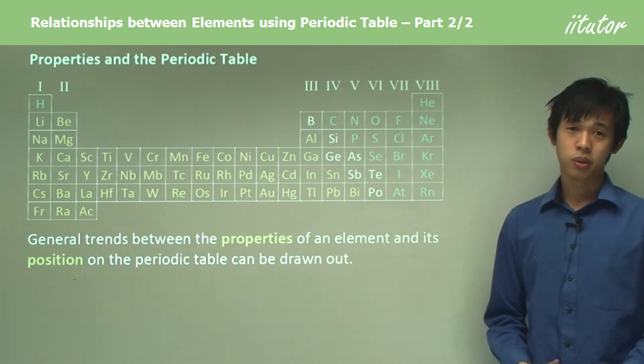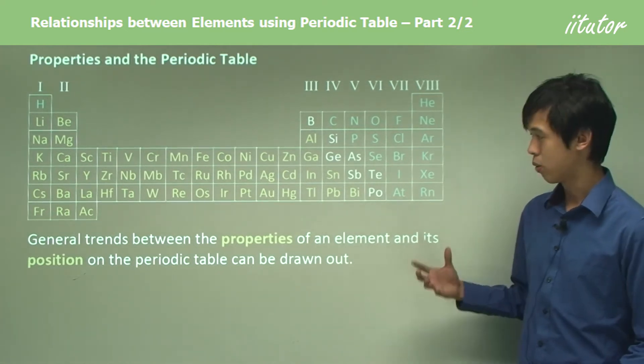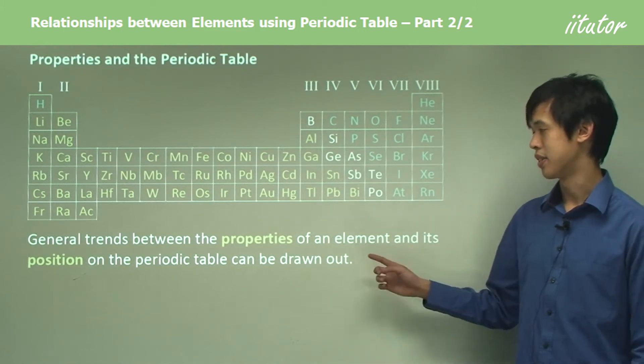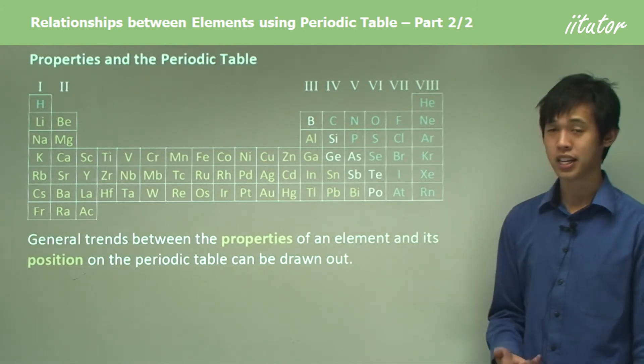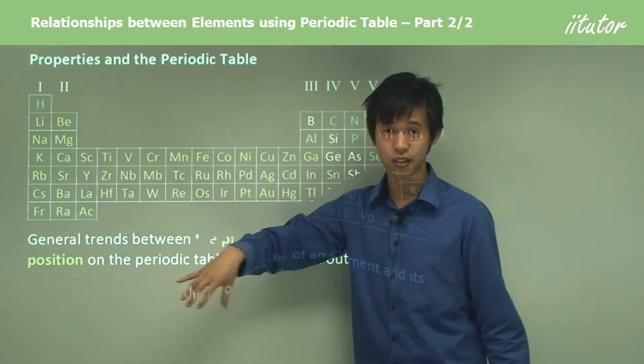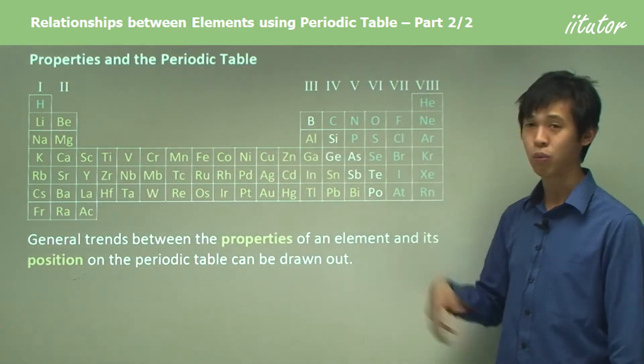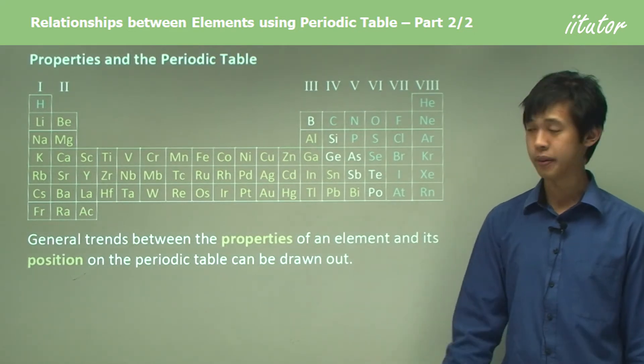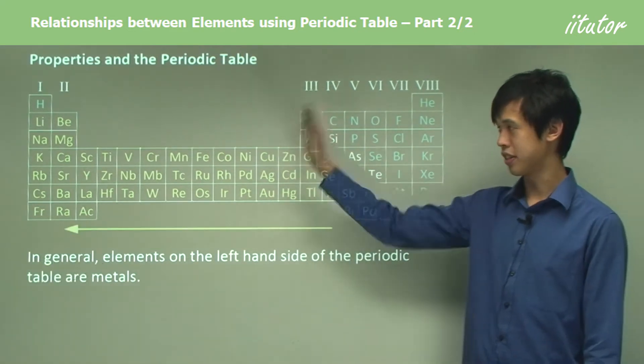What we're going to look at is basically the general trends in terms of general properties that we see of an element and its position on the periodic table. Can we find any sort of relationship between where an element sits and what properties it would have?